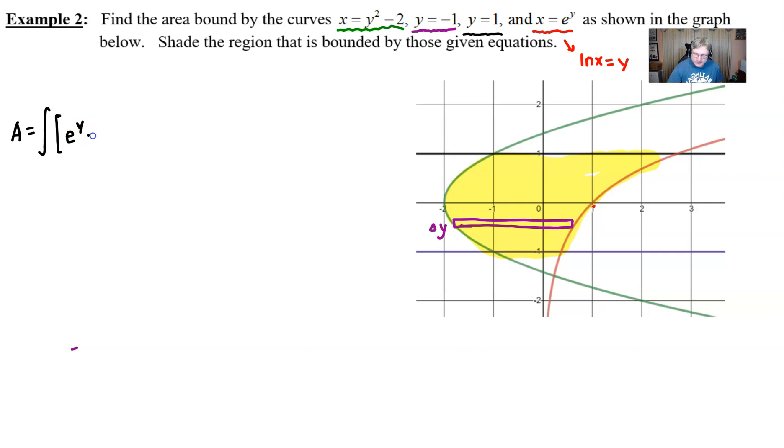So e^y is going to be first - that's our red equation - and you're going to subtract the quantity (y² - 2). In the event you mixed those up, your answer would turn out negative, which means you'd probably notice you've got to make an adjustment.